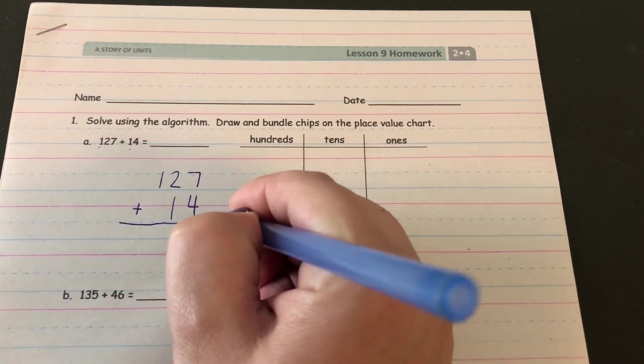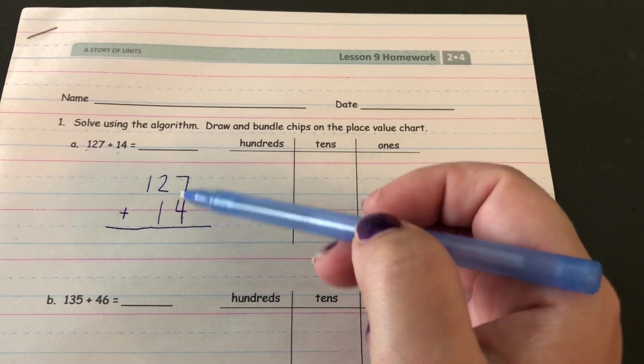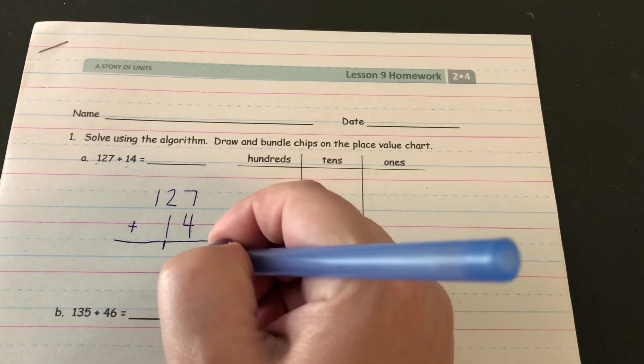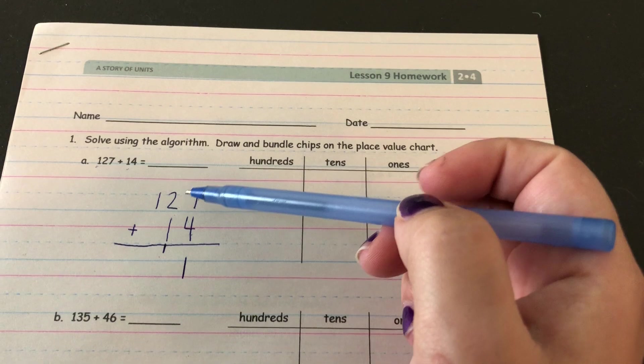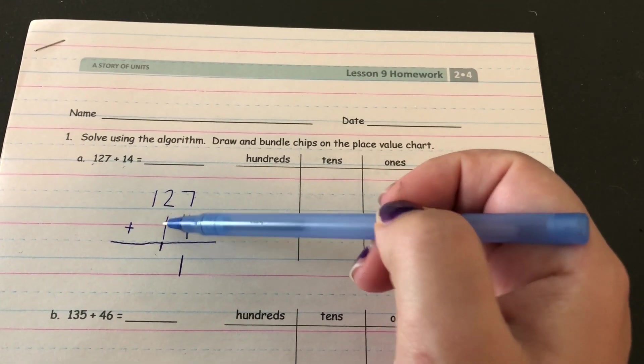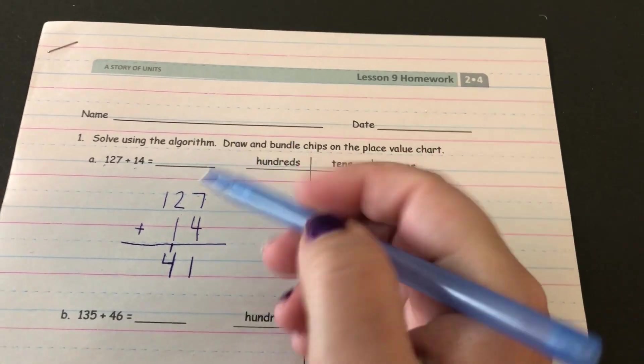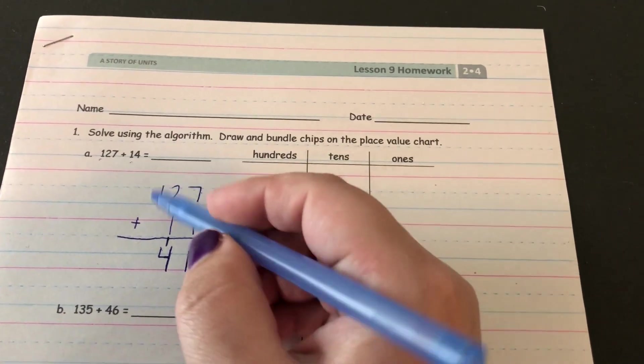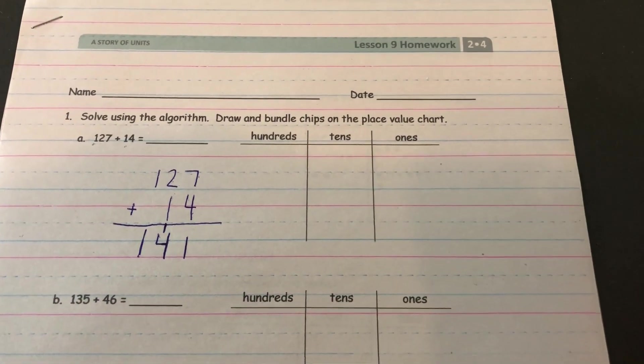Now I can add. So I'm going to start off with seven ones plus four ones and it gives us 11. So I show this as one ten and one one. Now I'll go into my tens place. Two tens plus one ten is three tens plus one more is four tens. And now I've got 100 and there's no other hundreds in this number so that 100 is just going to come right down to get the answer of 141.